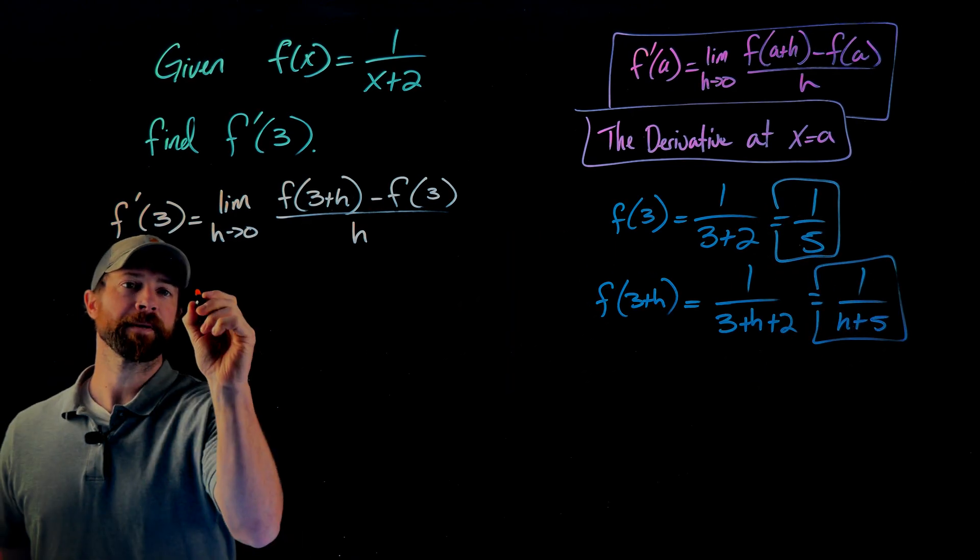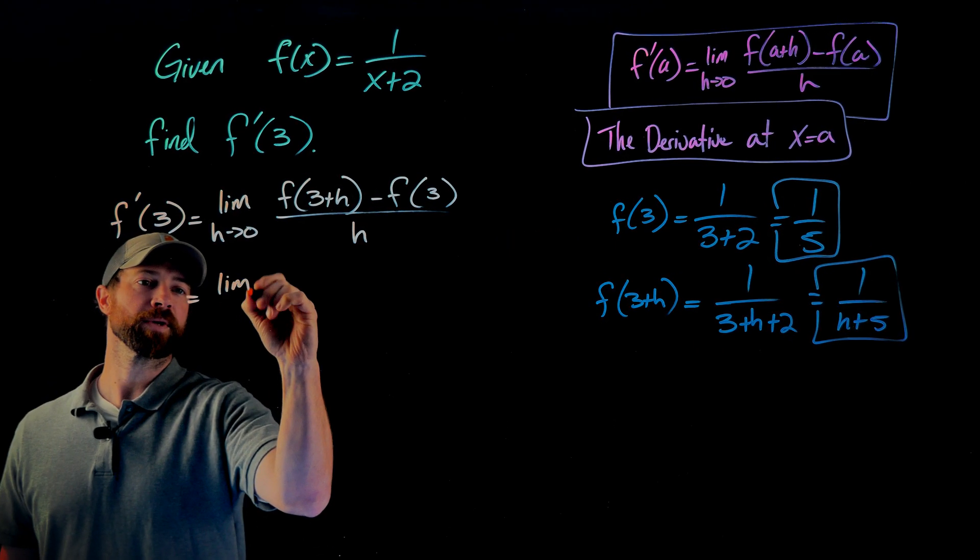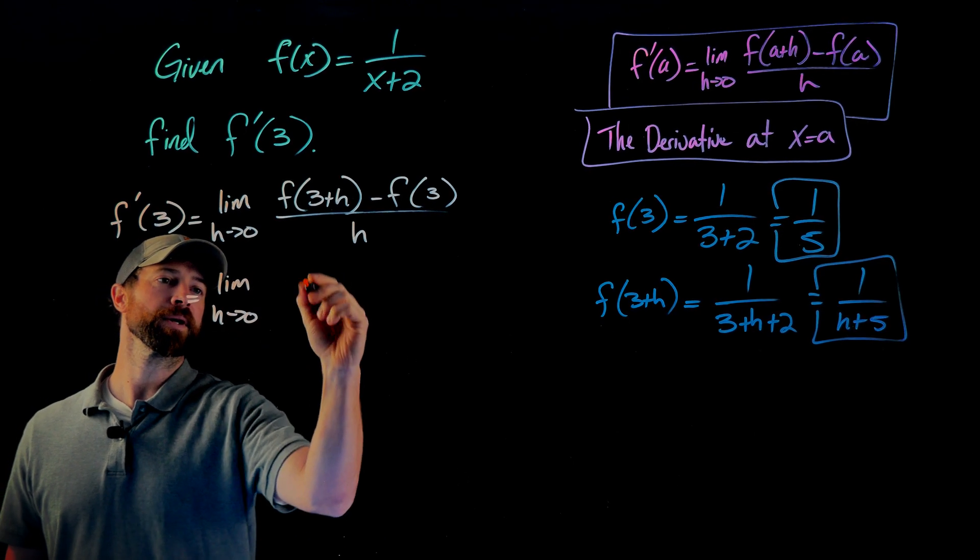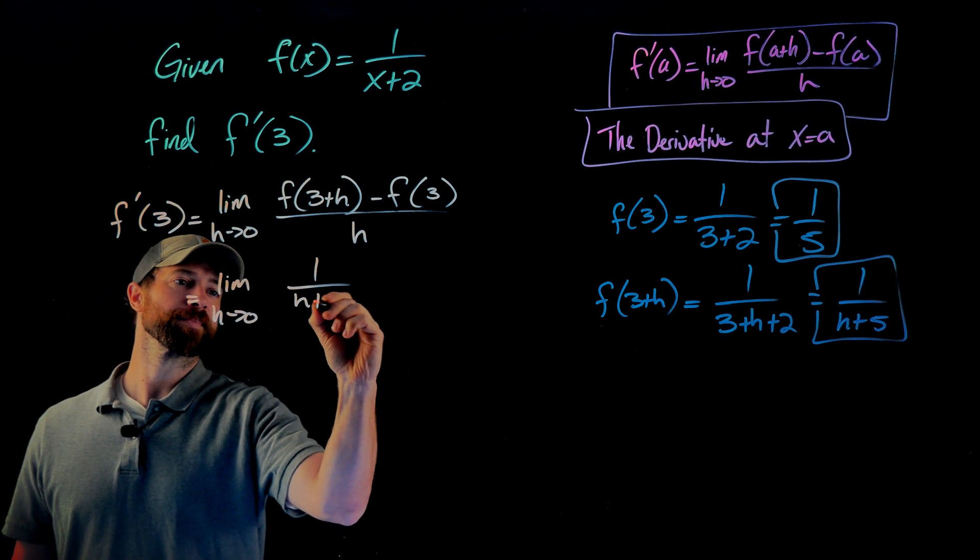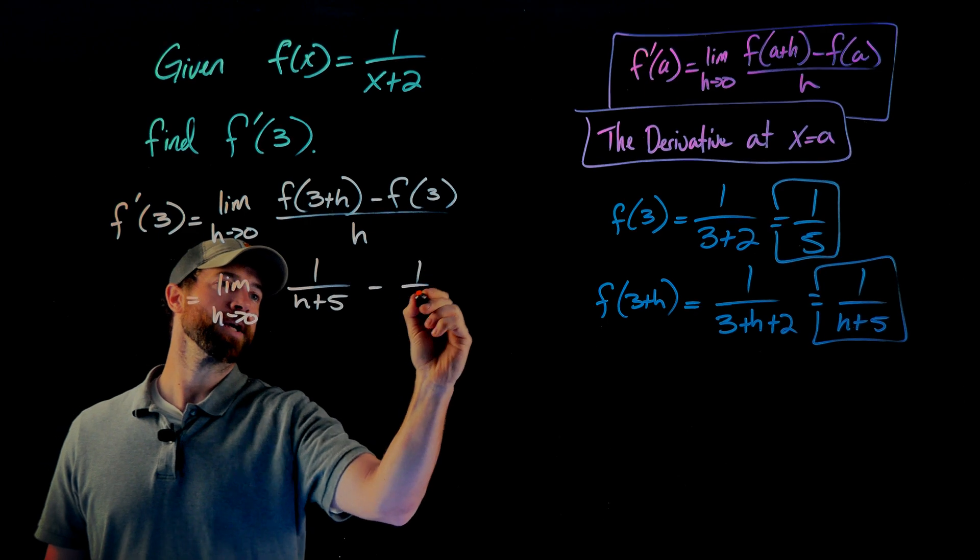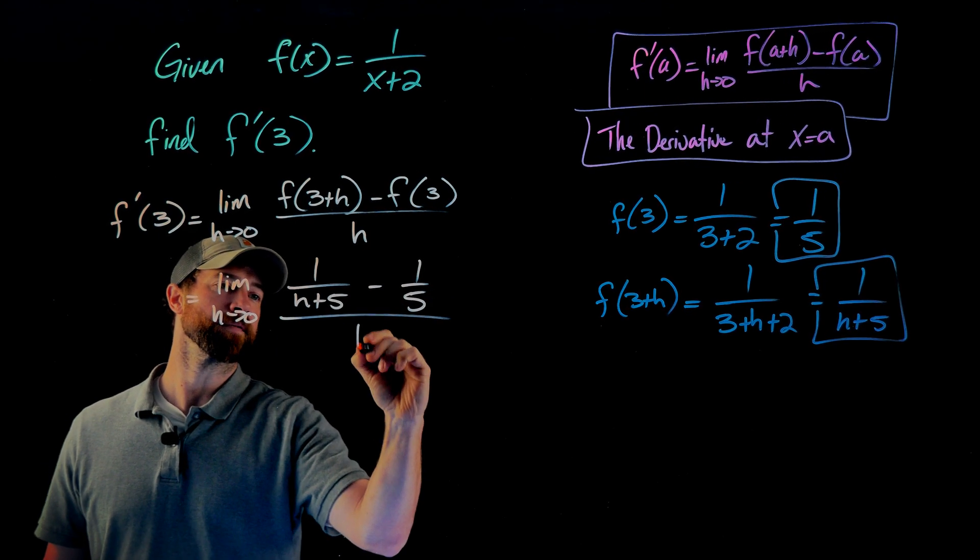So the first step, I'm just going to plug in that work into this. So I have the limit as h goes to 0 of 1 over h plus 5 minus 1 over 5 all over h.